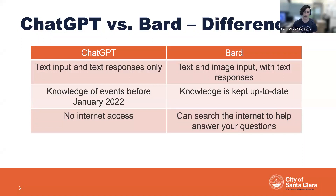BARD has its knowledge kept up to date — it's continually being fed new information. So when you ask it a current event, it would be able to tell you because its information is constantly updated. A final difference is that ChatGPT doesn't have internet access, so when it gives you answers, it's only going off what it remembers from training data, whereas BARD can search the internet the same way you or I might Google something, and use the articles it finds to help answer your question.